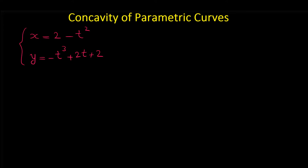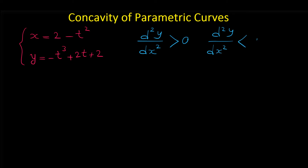We want to find for what values of t this curve is concave up and for what values of t this curve is concave down. Remember, a curve is concave up if the second derivative d²y/dx² is positive, and is concave down when the second derivative is less than zero. A curve is concave up when it is in this form and concave down when it is this form.